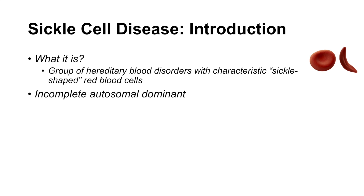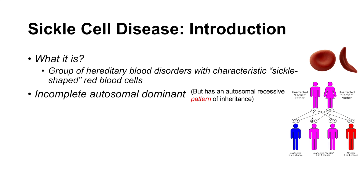Sickle cell disease is inherited and is actually inherited in incomplete autosomal dominant fashion. In the schematic you can see that an affected individual has two copies — they're homozygous, so they have two copies of the affected allele. Individuals with only one allele are considered unaffected carriers. It appears to be a recessive condition, but even individuals with one of the affected alleles can be affected to a very slight degree, so that's why we consider it incomplete autosomal dominant.